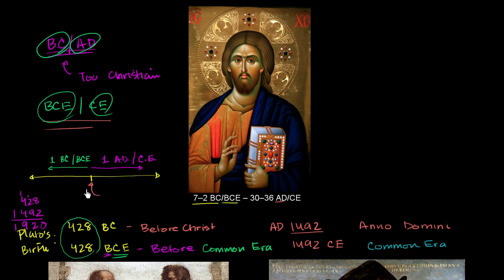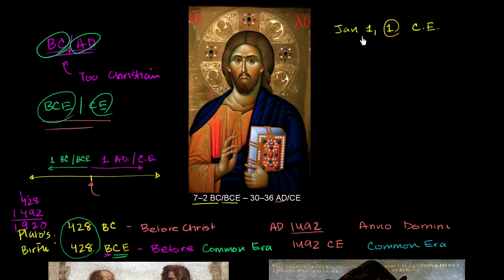Jesus was probably born before that. It is actually 1,491 years since the theoretical birth. To think about it this way: January 1, year 1 in the Common Era — how long is that since the birth of Jesus? It's not 1 year, because that date is theoretically the day he was born. So this is 0 years, or almost 0 years, since that theoretical birth of Jesus.